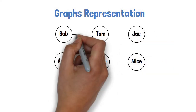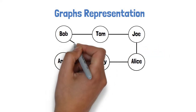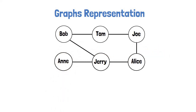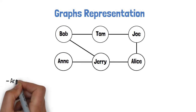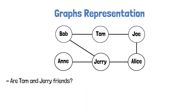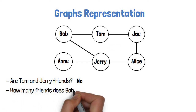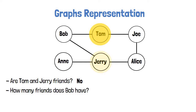For example, in a network of friendships, the vertices can represent persons and an edge between the vertices can represent that the two persons are friends. We can then discuss questions such as: Are Tom and Jerry friends? Since there is no edge between Tom and Jerry, the answer is no. How many friends does Bob have? We see Tom is connected to Bob with an edge and also Jerry, so the answer is two.